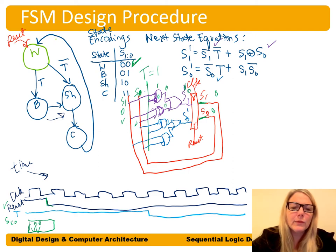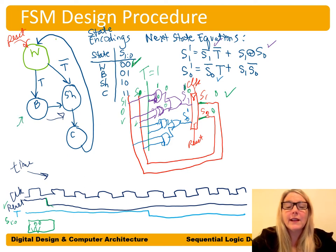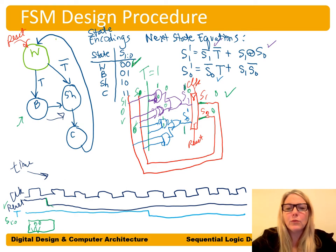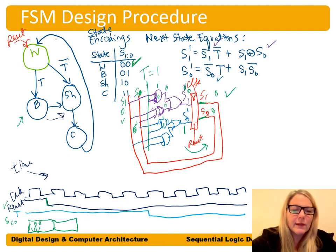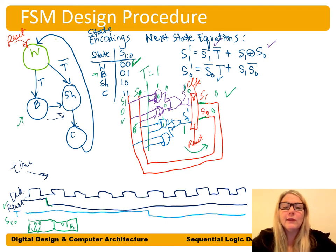So the next state, waiting on the left side of the state register, is 01. At the next clock edge, that becomes the current state: 01, which is the B (breakfast) state. This is what we expected — if we had time and were in the W state, we go to the breakfast state.